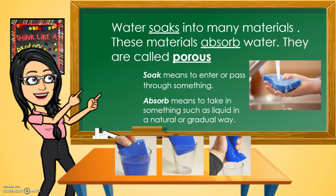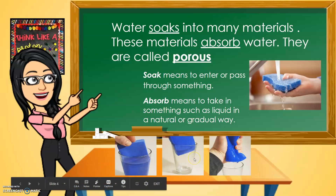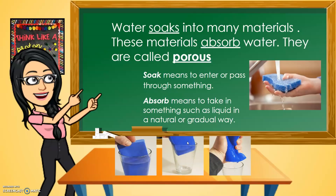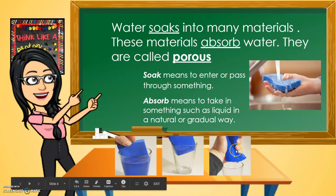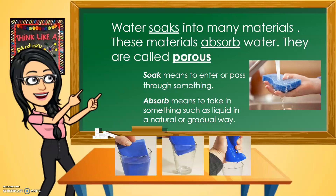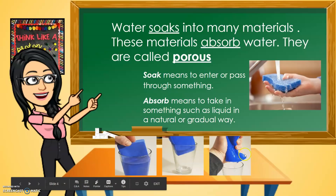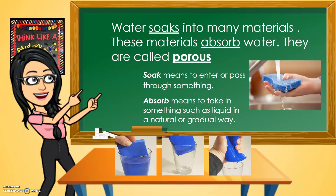How can we say that the sponge absorbed the water? What's our evidence? First, the amount of liquid decreases or it will be gone — it was taken in by the sponge. And when we squish the sponge, liquid comes out. That's the evidence that a material has absorbed water.